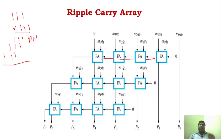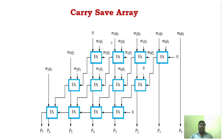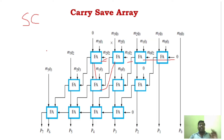In carry save adder, we modify the circuit so that the carry from one row is given as an input to the second row instead of propagating within the same row. This frees up one input in the first row, allowing us to generate sum and carry in parallel — that is the logic of carry save addition.